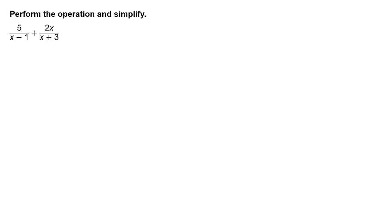Perform the operation and simplify 5 divided by the quantity x minus 1, plus 2x divided by the quantity x plus 3. First, write 5 divided by the quantity x minus 1 plus 2x divided by the quantity x plus 3.